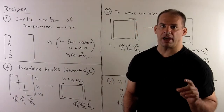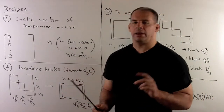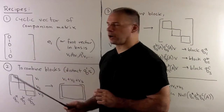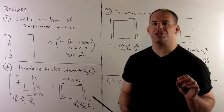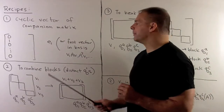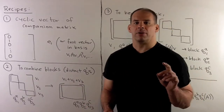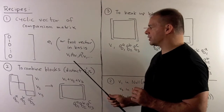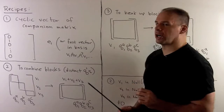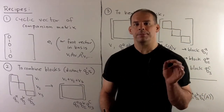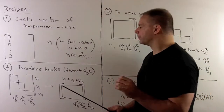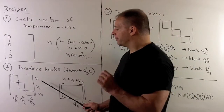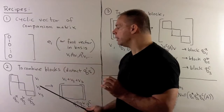Let's summarize our procedures. First, if we're given a companion matrix for any monic polynomial and looking for a cyclic vector, we always go with the vector for the first column. If working with a companion matrix in the standard basis, the cyclic vector is e_1. If the companion matrix is representing another matrix in some basis, we go with the first vector in that basis — so we'd have v, Av, A²v, and so on, with v as our cyclic vector. If we're in rational canonical form in the first formulation and want to combine blocks corresponding to distinct irreducible factors, we find a cyclic vector for each block and take their sum.